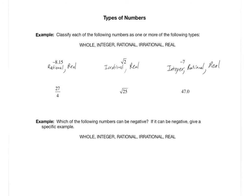27 fourths as a decimal is 6.75 — a decimal expansion that stops. So it's not whole and not an integer, but it is rational because it stops. Of course it can't also be irrational — it's one or the other. And if it's rational, it's also real.